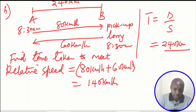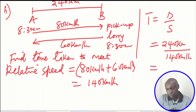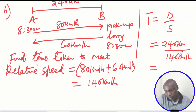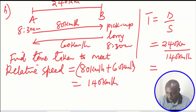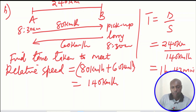So to get the time taken for them to meet, we take the distance between them — which is 240 km — divided by the relative speed of 140 kilometers per hour. Using a calculator to divide 240 by 140, this gives one hour and 43 minutes. So that is the time taken for them to meet.